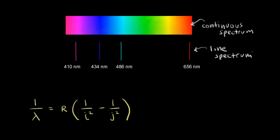You see one red line, and that red light has a wavelength of 656 nanometers. You'll also see a blue-green line with a wavelength of 486 nanometers, a blue line at 434 nanometers, and a violet line at 410 nanometers. This emission spectrum is unique to hydrogen, and so this is one way to identify elements. Since line spectra are unique, it's pretty important to explain where those wavelengths come from.